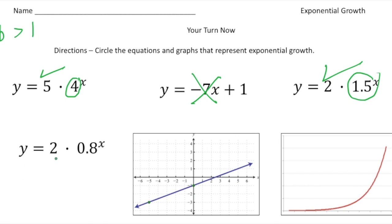Here we have y equals two times eight tenths to the x power. And this would not be one because again, the b value has to be more than one. And this is less than one. Here we have a linear function, a linear graph. So that's not what we're looking for. And last but not least, we have a graph that is quickly increasing in the y values as we go across the x. So this would definitely be an exponential growth function as well. All right, how'd you do?